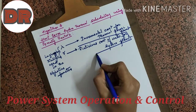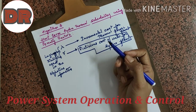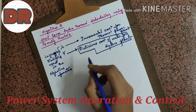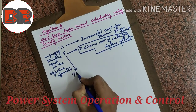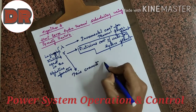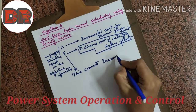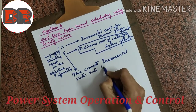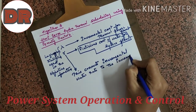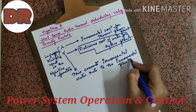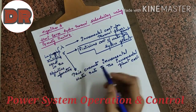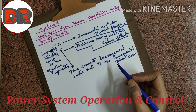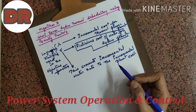We have to make use of this cost because we want the incremental cost for the hydro plant, that is why we multiplied gamma in the Lagrangian equation. This converts the incremental water rate to the incremental plant cost. Ultimately, the objective function has to be in incremental plant cost.